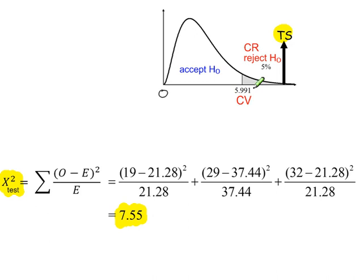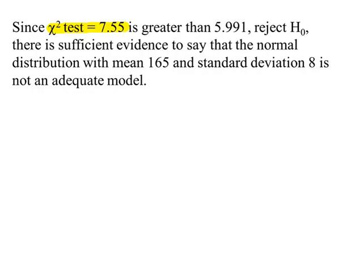The critical value from the chi-squared tables using the degrees of freedom we've worked out and a 5% significance level. The conclusion in context, making mention of the probability distribution with its parameters.